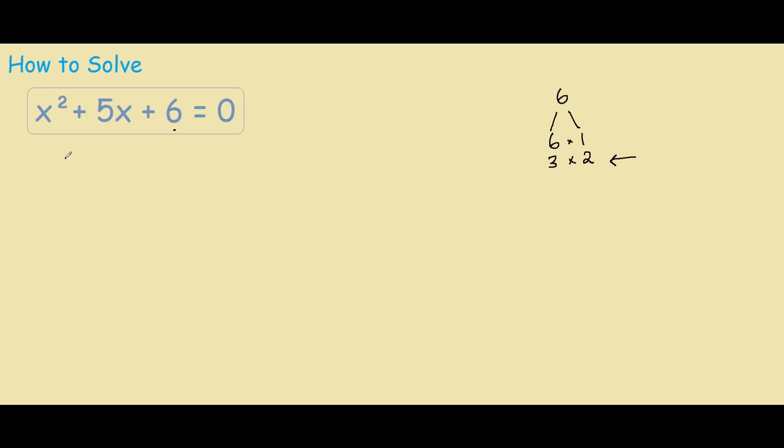So if we make our two brackets, we have x here, x here, and then we put our two factors in. So plus 3 from here, and plus 2.